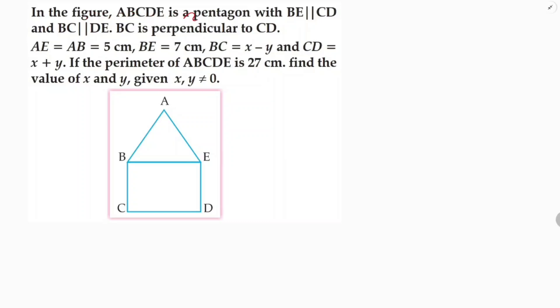In the figure, ABCDE is a pentagon with BE parallel to CD, BC parallel to DE, and BC perpendicular to CD. So indirectly they're telling this is a rectangle, because opposite sides are parallel making it a parallelogram, and since one angle is 90 degrees, it's a rectangle.